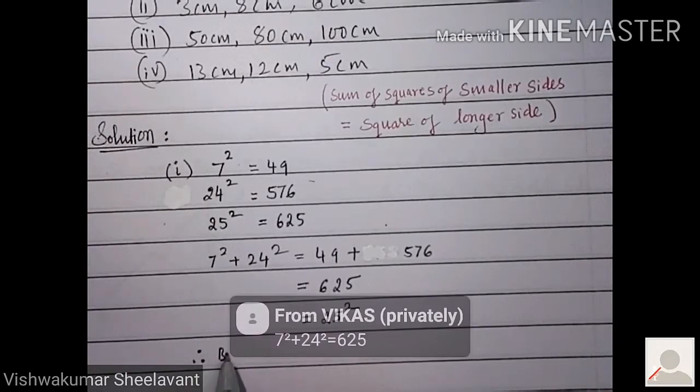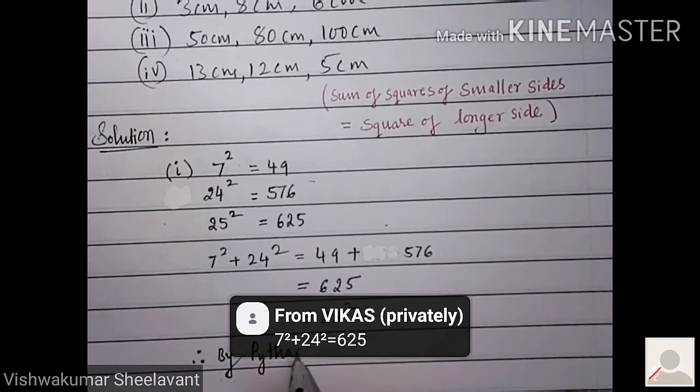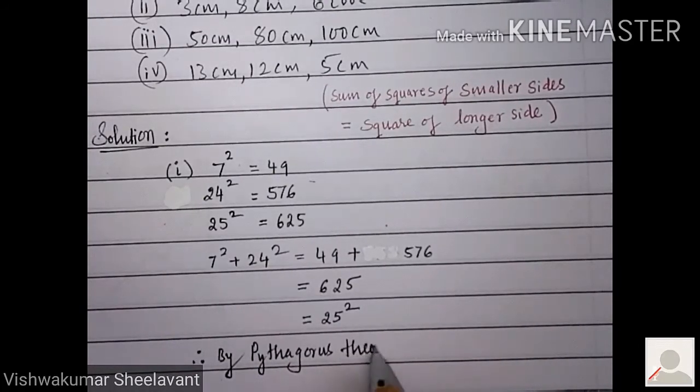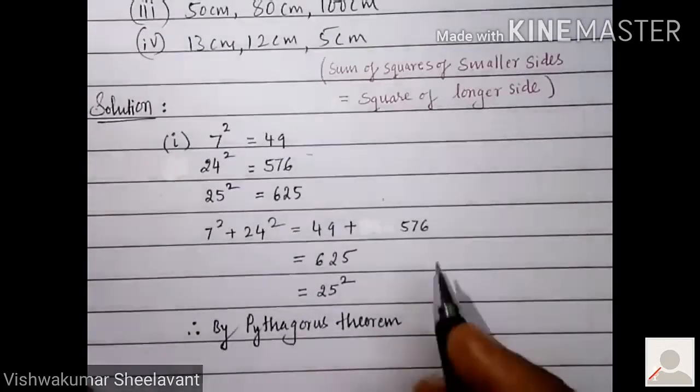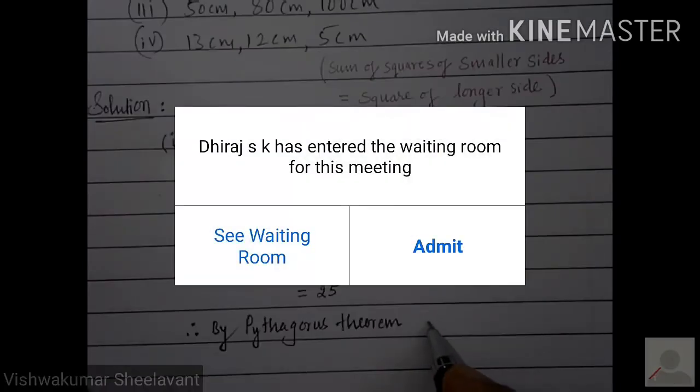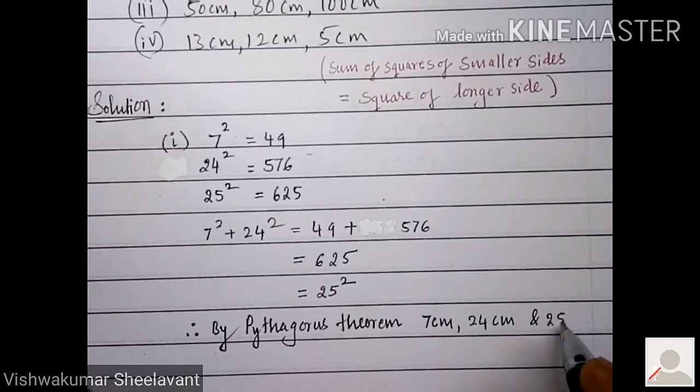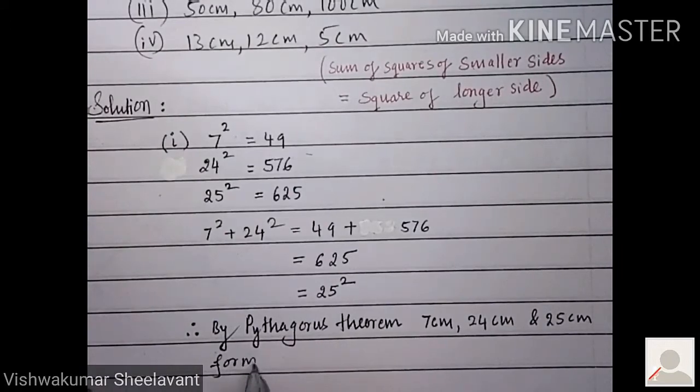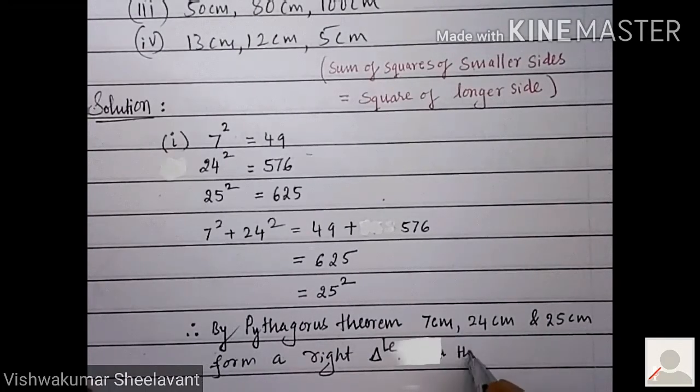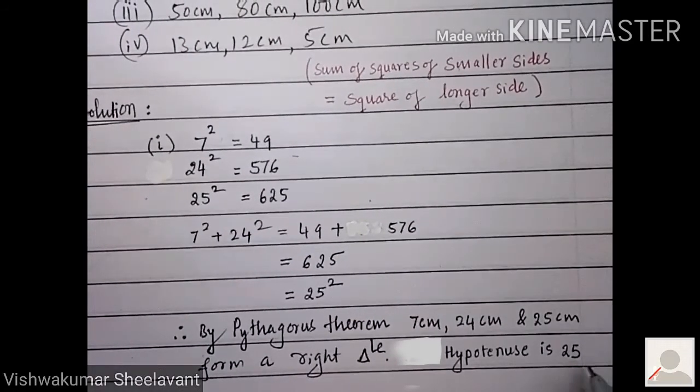Therefore, by Pythagoras theorem, 7 centimeter, 24 centimeter, and 25 centimeter form a right triangle. Hypotenuse is 25 centimeter.